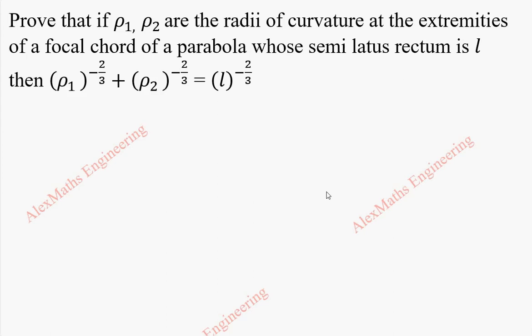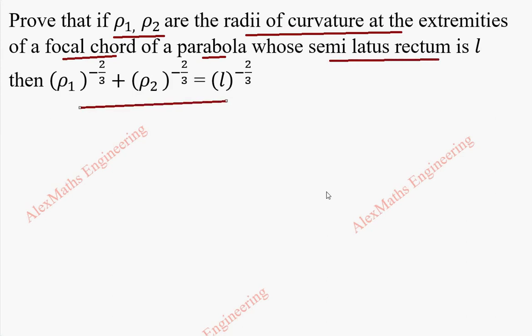Hi students, this is Alex here. In this problem, we are going to prove: if ρ₁ and ρ₂ are the radii of curvature at the extremities of the focal chord of a parabola, whose semi-latus rectum is L, then we are going to prove this expression.